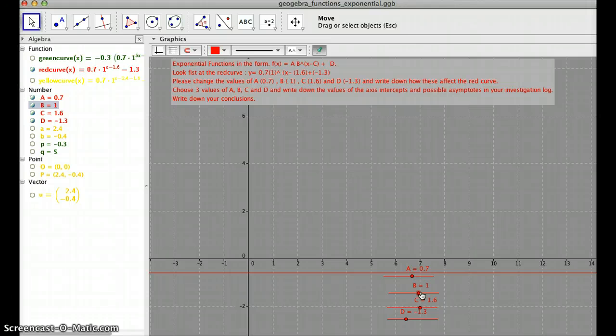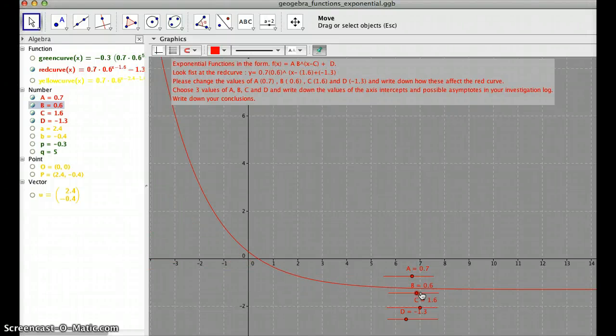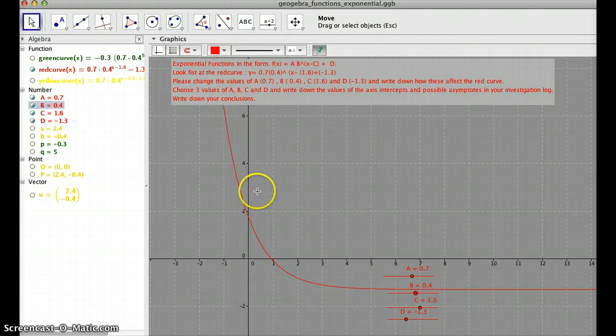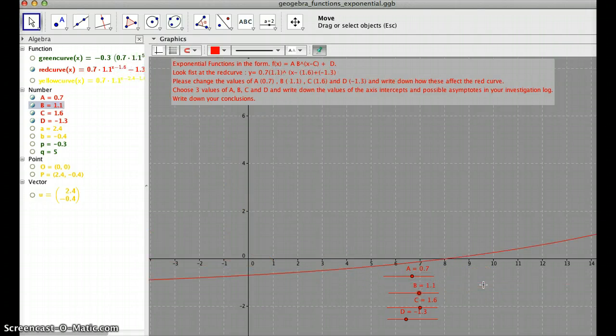If b is negative, we can see that the function decreases. So this was exponential decay and the other one was exponential growth.